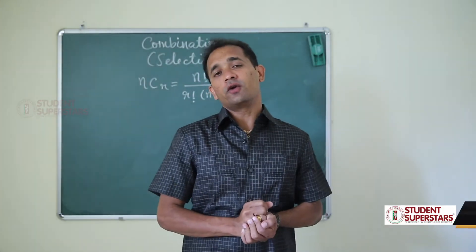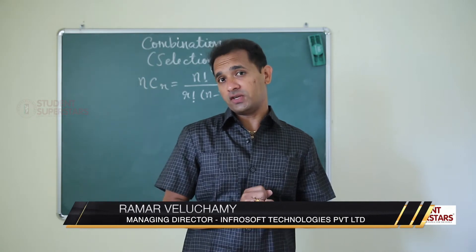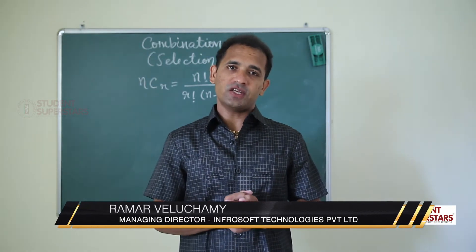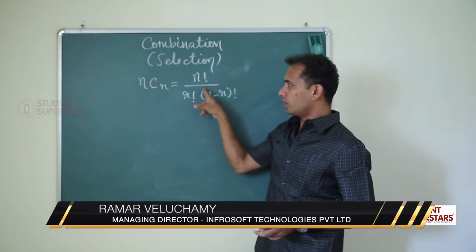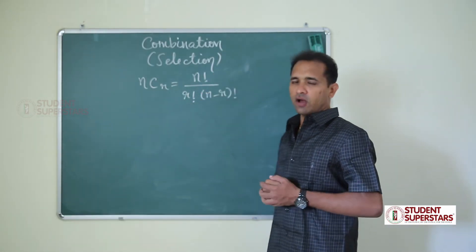Hi guys, in this video we are going to learn problems on combinations. Combination means selection. nCr is equal to n factorial by r factorial into n minus r factorial.